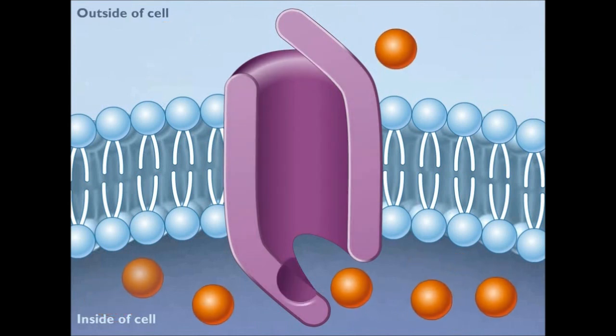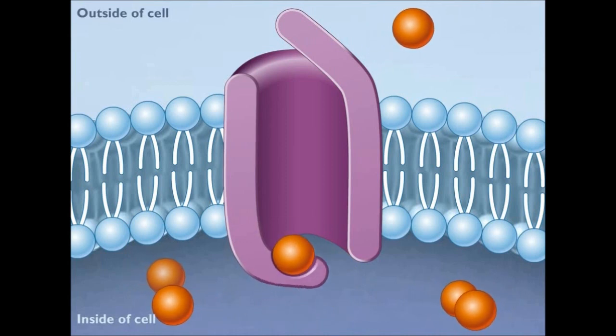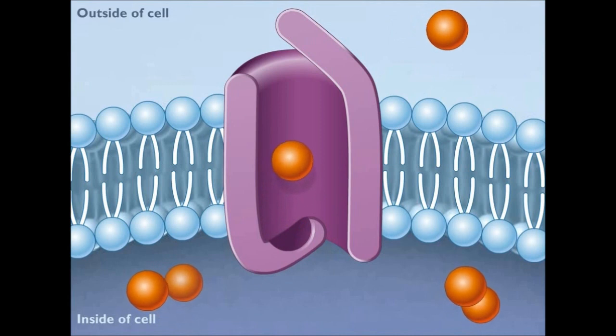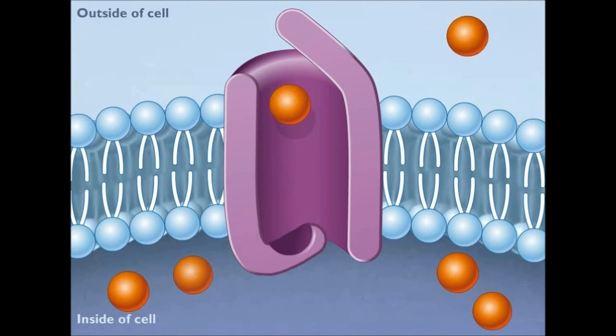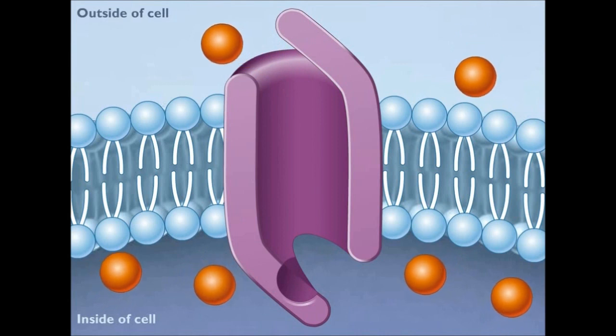Facilitated diffusion can occur in either direction depending on the concentration gradient. If there is a higher concentration of the particular molecule inside the cell, the same carrier protein would then transport the molecules out of the cell.